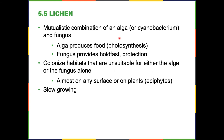Lichen would be our last eukaryotic microbe group. Lichen are interesting because they're a mutualistic combination of an alga or cyanobacterium and a fungus. Remember what mutualistic means — both organisms benefit. The alga produces food through photosynthesis, producing carbohydrates. The fungus provides a holdfast or protection — it wraps itself around the algae and allows it to survive and live in areas that are really unsuitable for either organism alone.